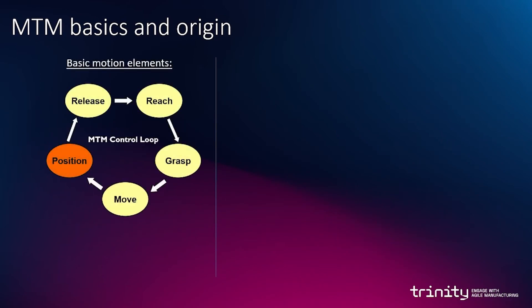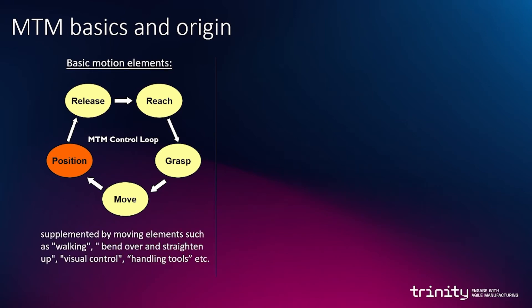The picture on the left shows the MTM control loop, which contains the five basic movements of MTM. The first one is reach — to a part or to a tool, for example. The second one is grasp this part or tool, then move back. The next one is positioning — for example, a part in a jig or fixture — and finally release the hand. These basic motion elements are supplemented by additional elements like walking, bend over, straighten up, visual control, handling tools, and so on.